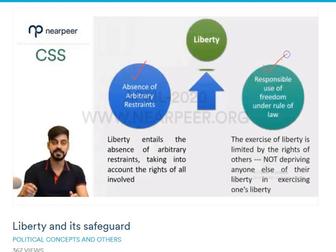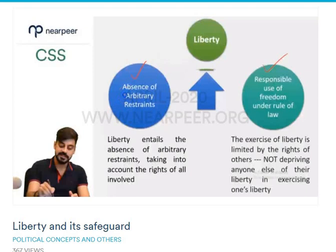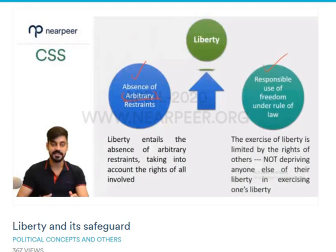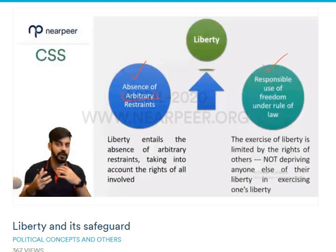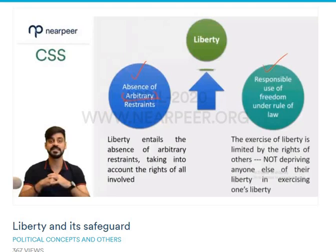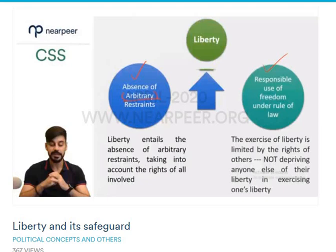The first element is the absence of arbitrary restraints, and the second is its responsible use under rule of law. The word 'arbitrary' means something which is not defined, something which happens by whim or without any code of law. So if a king exercises arbitrary power, but if a judge has legal principles behind a decision, that is not the exercise of arbitrary power. You should understand that distinction between the two.